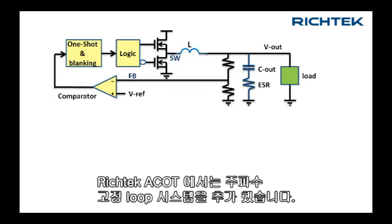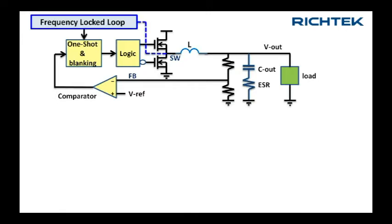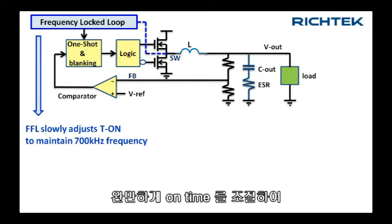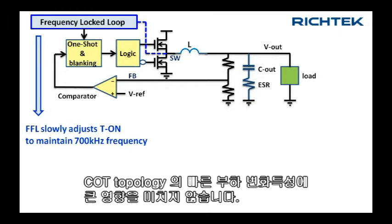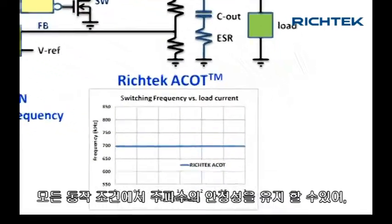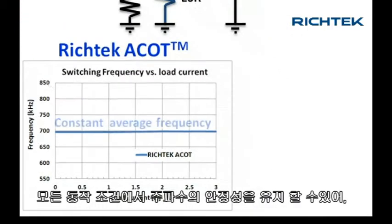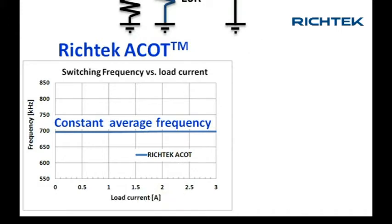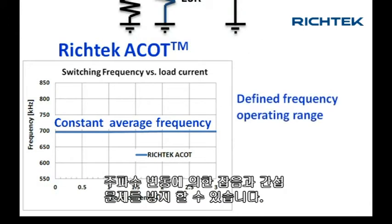To solve this frequency variation problem, RichTech's advanced COT has added a frequency locked loop system, which slowly adjusts the on-time without influencing the fast transient behavior of the COT topology. The result is a virtually constant average frequency in all operating conditions, which helps to avoid noise and interference issues due to changing frequencies.